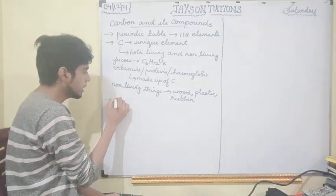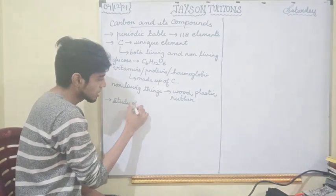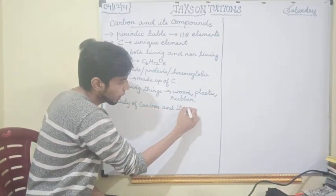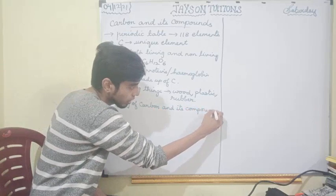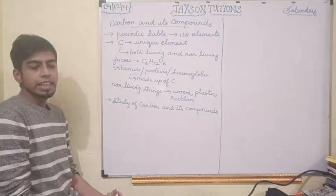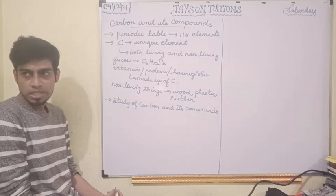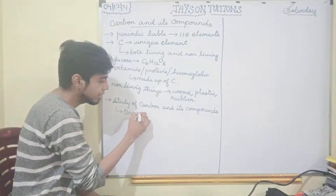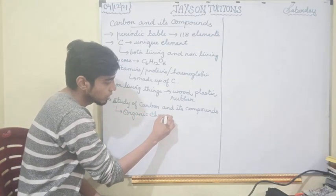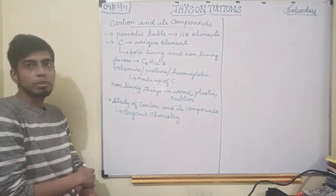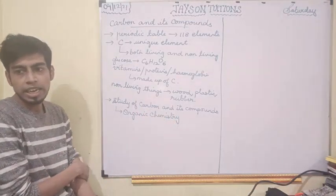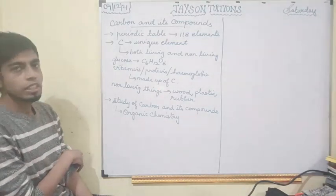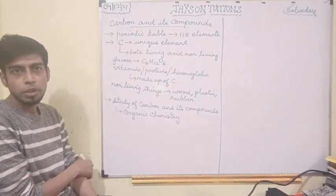The study of carbon and its compounds comes under a separate branch of chemistry called organic chemistry. In organic chemistry, we will fully study the carbon and its compounds — properties, uses, everything. So that's the introduction for carbon and its compounds.